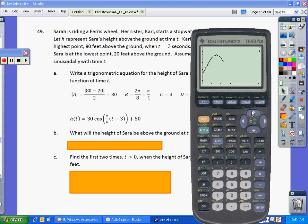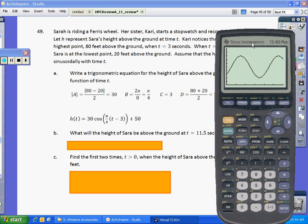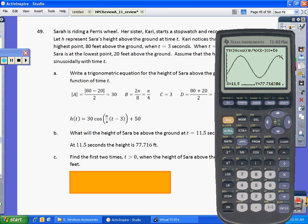So there's a picture of our riding the Ferris wheel. Okay, so they want to know the value at 11.5 seconds. So if you hit second trace, which is calc, hit enter for value, and you type in 11.5, and hit enter, it tells us that she is 77.7 feet above the ground. So 77.716 feet above the ground.